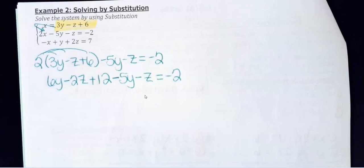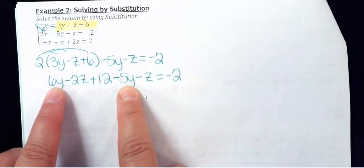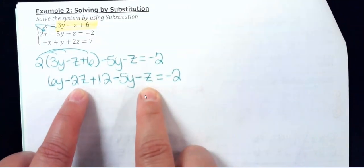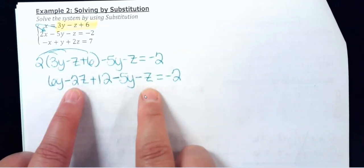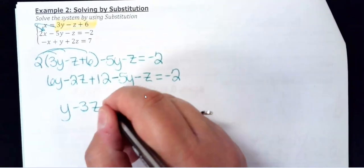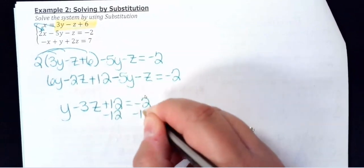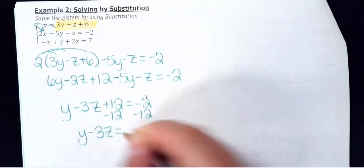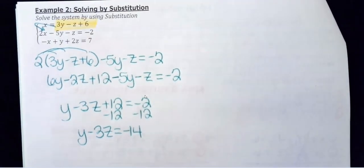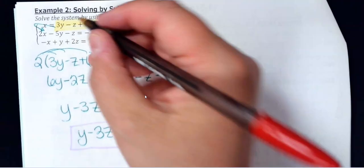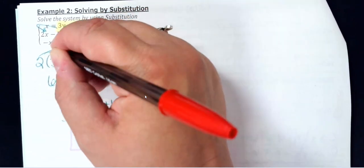Substituting into equation two and distributing the 2: 6y minus 2z plus 12 minus 5y minus z. Combining like terms — 6y minus 5y is just y, negative 2z minus z is negative 3z, then moving the 12 to the other side: y minus 3z equals negative 14. By substituting in for x, we've eliminated x from this equation.